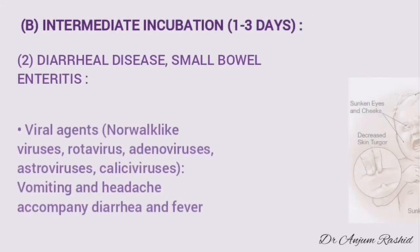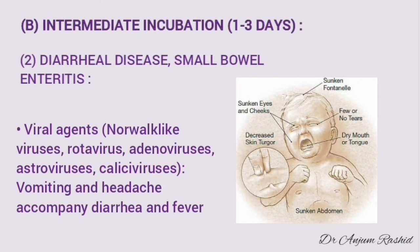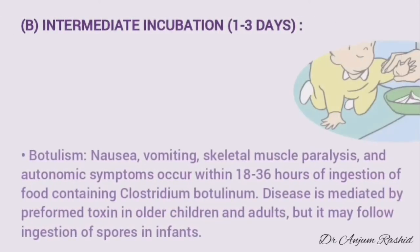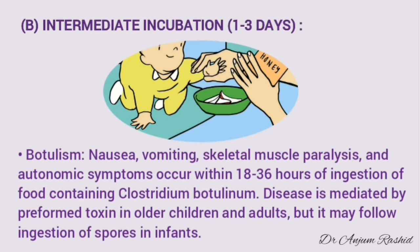Some viruses also produce diarrheal disease due to small bowel enteritis. These include Norwalk-like virus, rotavirus, adenovirus, astrovirus, or calicivirus. These produce vomiting and headache, and there may be diarrhea and low-grade fever. Botulism is also included in the intermediate incubation period group. Nausea, vomiting, skeletal muscle paralysis, and autonomic symptoms occur within 18 to 36 hours of ingestion of food containing Clostridium botulinum. The disease is mediated by the preformed toxin in older children and adults, but it may follow ingestion of spores in infants.